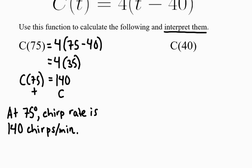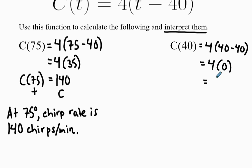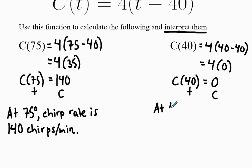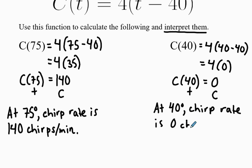One more: what if I do C of 40? C of 40 would be 4 times 40 minus 40, which leaves 4 times 0, which is 0. This is kind of where the model breaks down — it's essentially saying that when the temperature is 40 degrees, the chirp rate is 0 chirps per minute. It starts to get too cold for crickets to be out and operating.